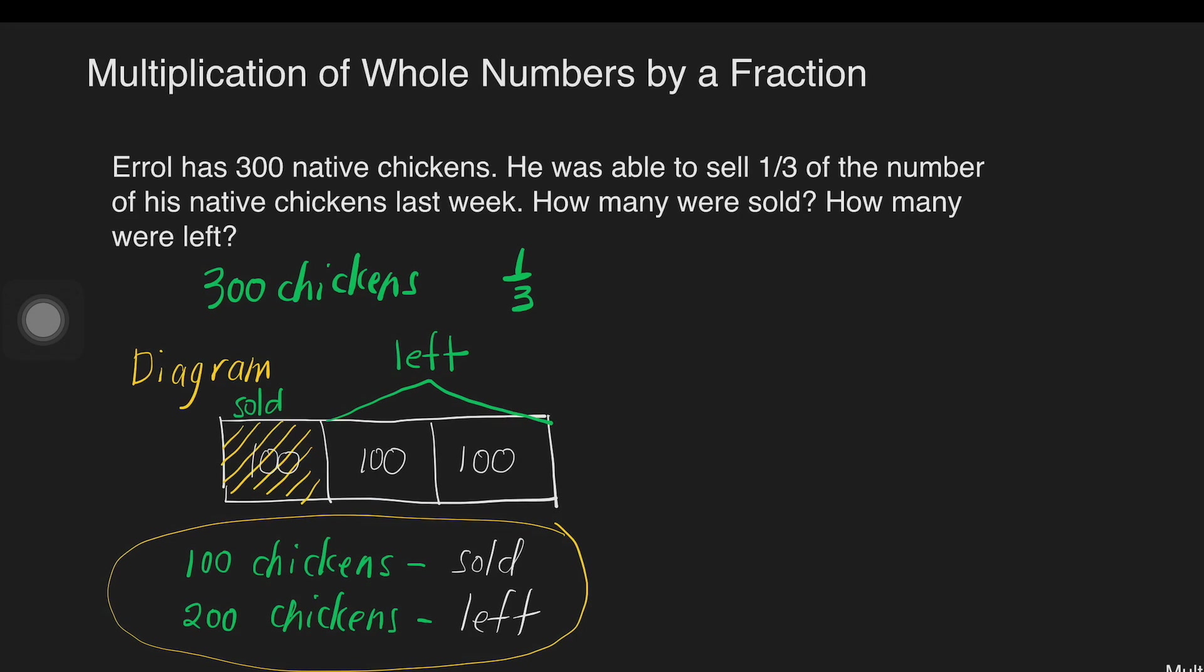Another way of solving this is by multiplying 300 chickens times 1 third. Is there something that we can cancel? Yes. That's 300 and then 3. What number can be divided by both of them? It's 3. So 300 divided by 3 is 100. 3 divided by 3 is equal to 1. So 100 times 1 is equal to 100. Then copy 1. That's 100 divided by 1 is 100. And then we can also just subtract it from the 300. 300 minus 100 is equal to 200. This is the number of chickens that were left. So we still have the same answer.